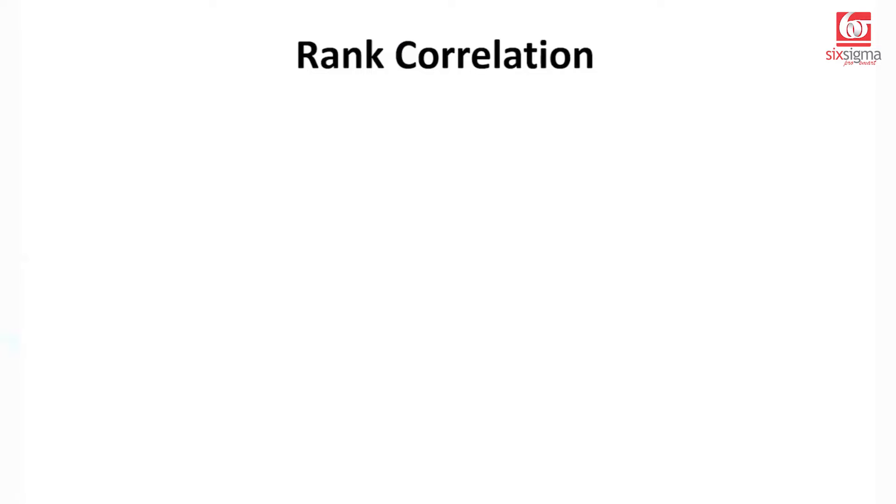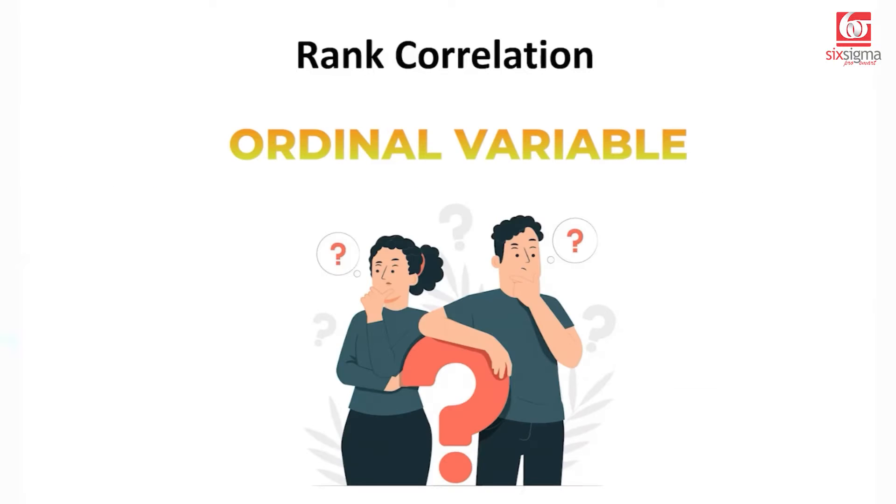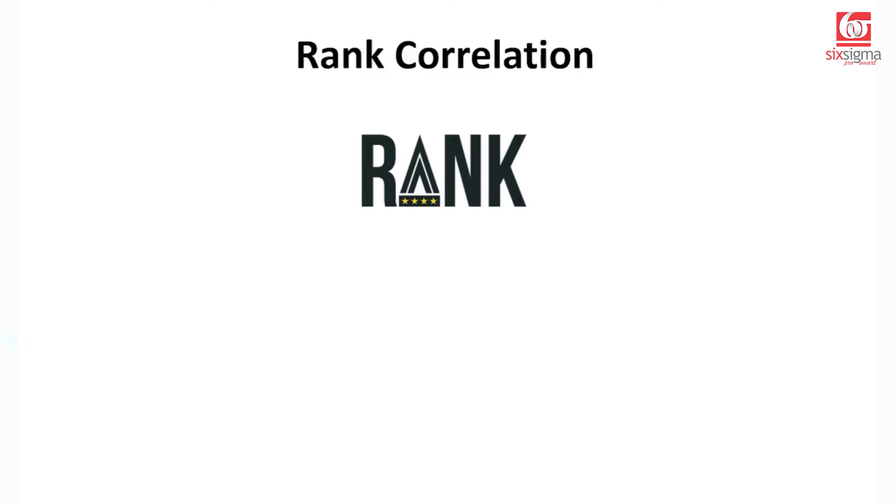We've already discussed Pearson's correlation, which essentially has certain prerequisites. First is that the variable should be linearly associated and the variable should comply to a normal distribution. But not every data is like that. What do we do in case of ordinal variables? When we do not necessarily have a value to talk about, but we want to see if the ranks or the order of the variables move together. In such cases, we apply rank correlations.